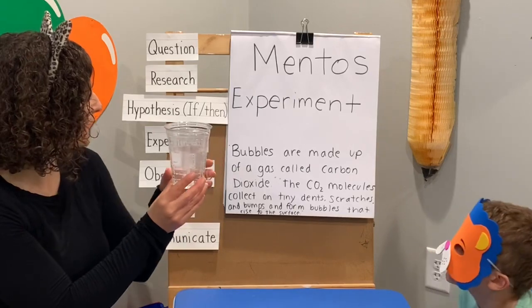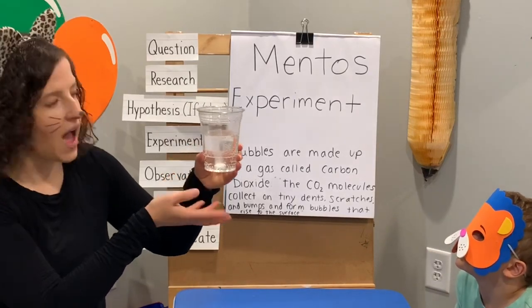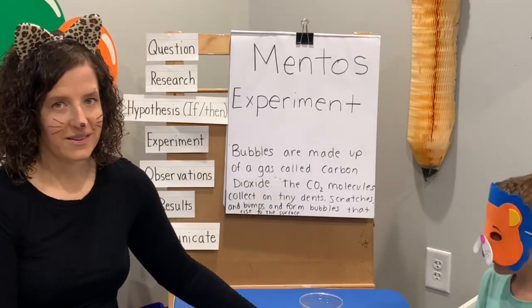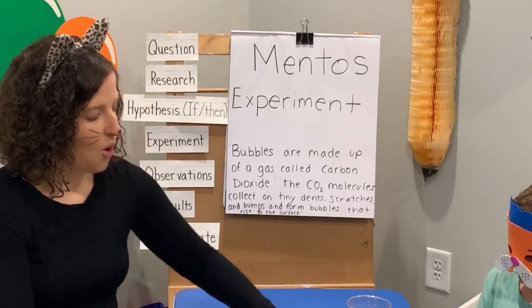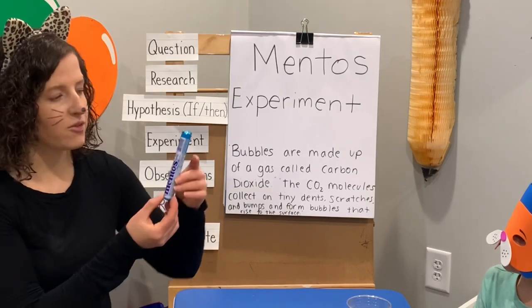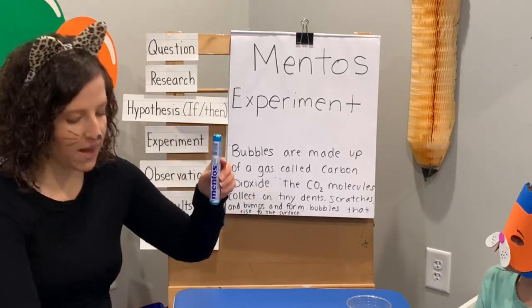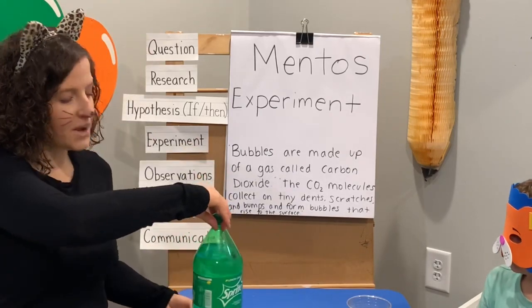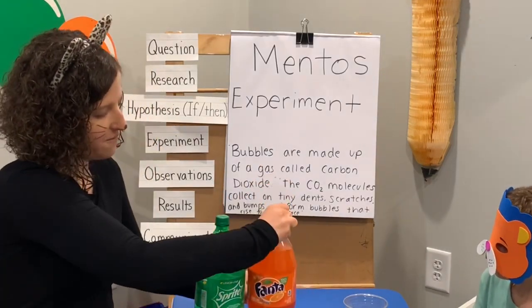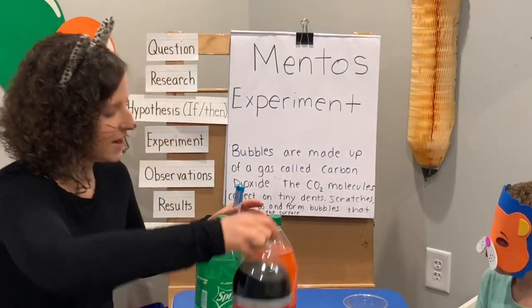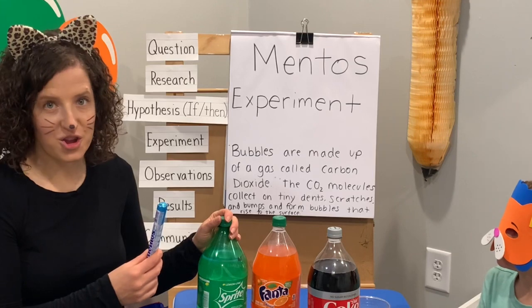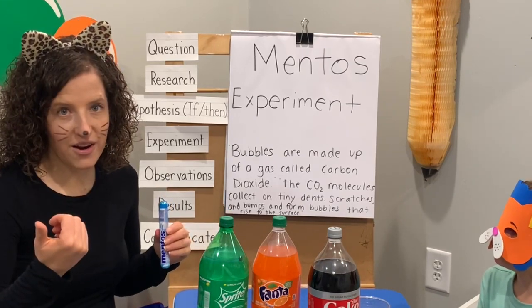So the carbon dioxide molecules form bubbles and then they rise up to the surface. For our experiment today we're going to see what happens when we add not just one Mentos, but a whole container of Mentos to a whole big bottle of pop. We have a Sprite, a Fanta, and a Diet Coke. We're going to have to take this outside because it's going to make a big mess. Are you ready? Let's head outside for our experiment.